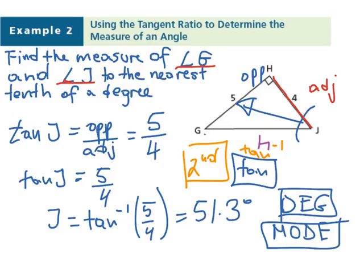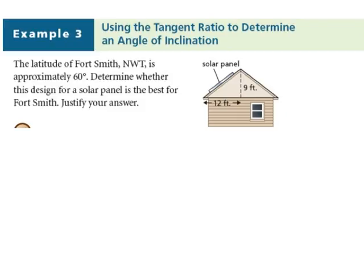Now, let's take a look at a different question. The latitude of Fort Smith, Northwest Territory, is approximately 60 degrees. Determine whether this design for solar panel is the best for Fort Smith. Justify your answer. Well, let's first talk about what is latitude of 60 degrees.